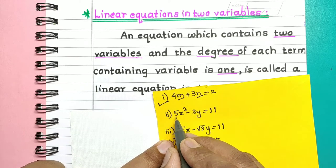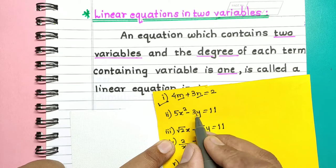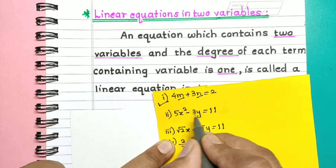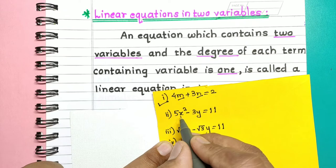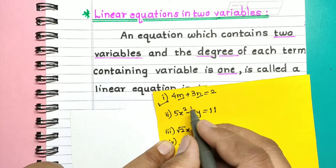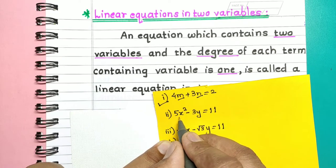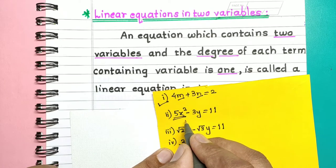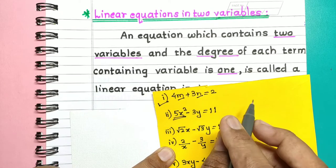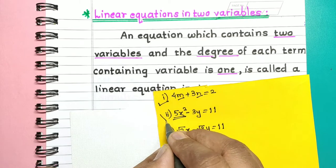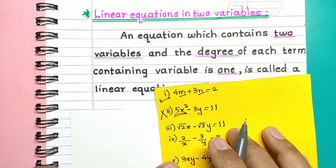Now consider a second example. It contains two variables x and y. In the first term there is variable x and its power is 2, so the degree of this term is 2. Therefore this equation is not a linear equation in two variables.